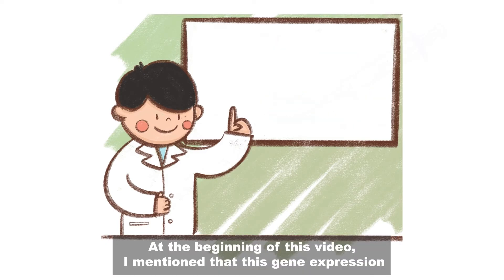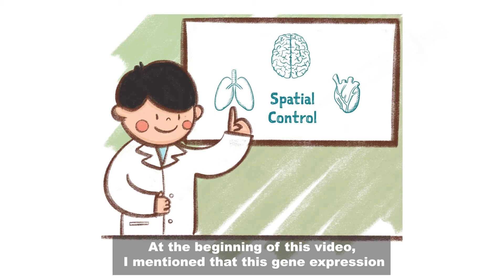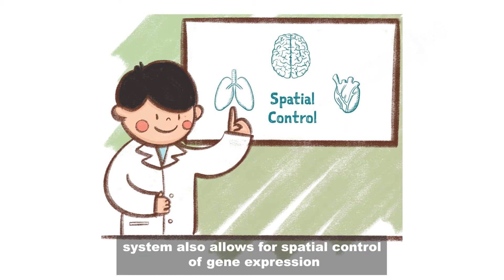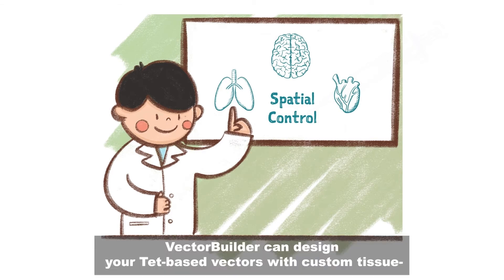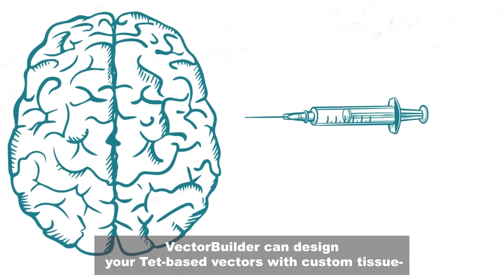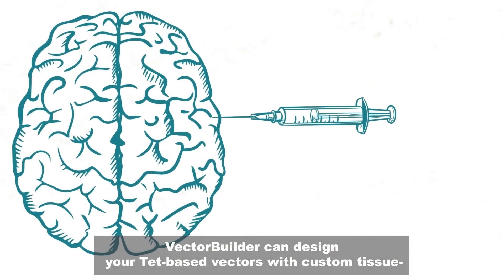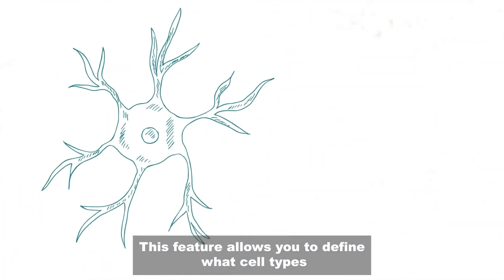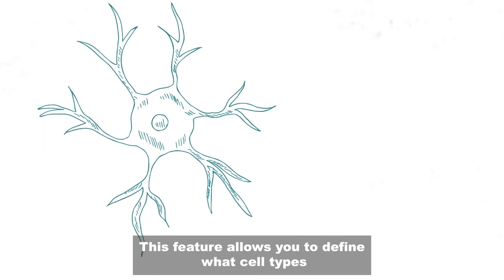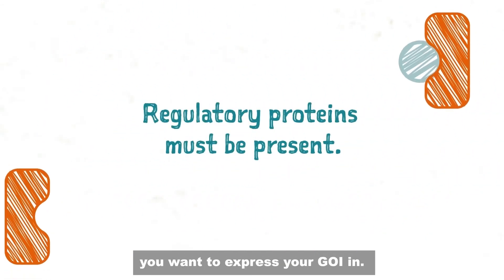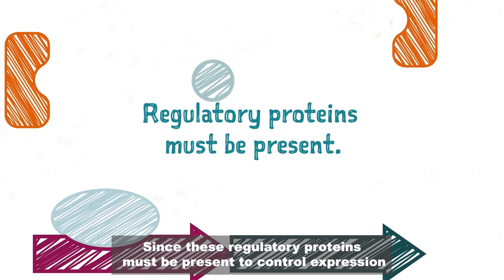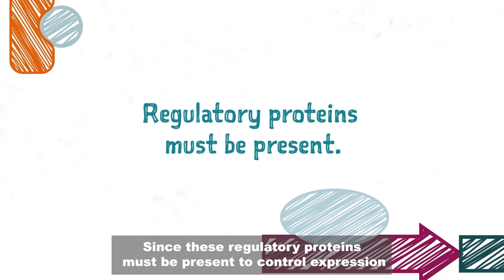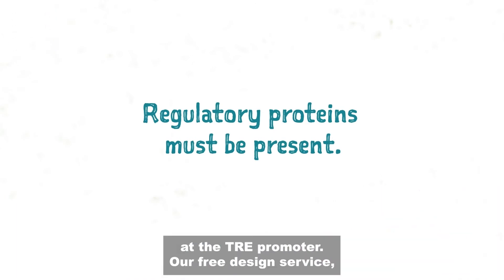At the beginning of this video, I mentioned that this gene expression system also allows for spatial control of gene expression. VectorBuilder can design your TET-based vectors with custom tissue-specific promoters controlling the expression of your regulatory protein. This feature allows you to define what cell types you want to express your GOI in, since these regulatory proteins must be present to control expression at the TRE promoter.